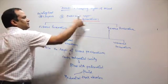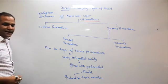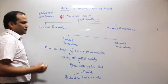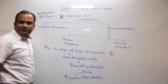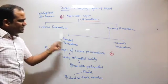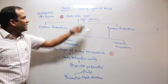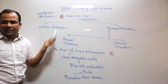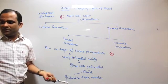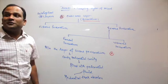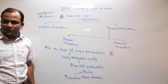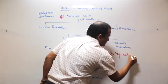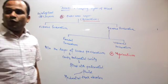The first layer is pericardium. What about the second layer? The main function of the heart is to pump blood — pericardium is for protection. So the second layer is made up of cardiac muscles. We call it myocardium.